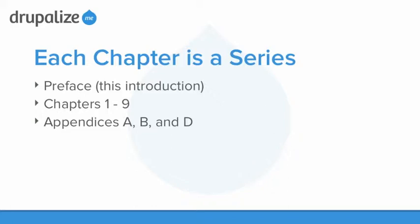We're going to do all of the chapters one through nine on the different case studies, and then we will be doing the appendices A, B, and D. You'll notice that C is not listed — C is just a listing of the contributed modules used throughout the book, and we'll be covering that at the beginning of each series individually. So there's no need to create a video series that's basically just telling you the modules we're using. Everything else from the preface through appendix D will be done, and each of those will be its own series of videos.